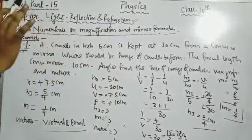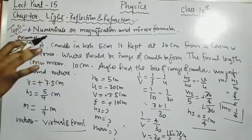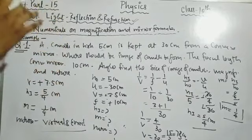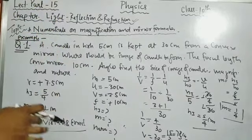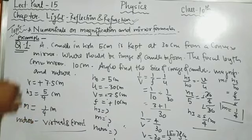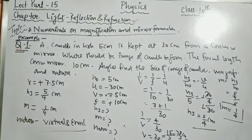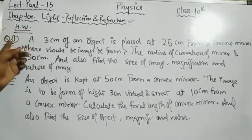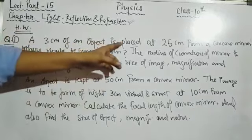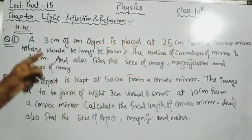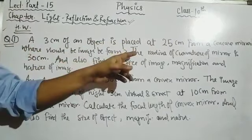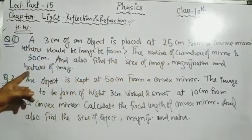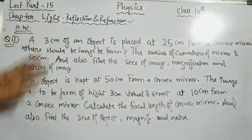Students, after these two questions you should now understand this level of problem — this is the type of question you will get in exercises and board exams. Now here is your homework. First question: a 3 cm object is placed at 25 cm from a concave mirror. Where should the image be formed? The radius of curvature of the mirror is 30 cm. Also find the size of image, magnification, and nature of image.